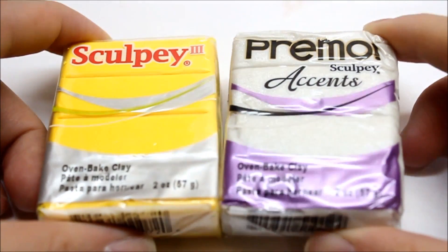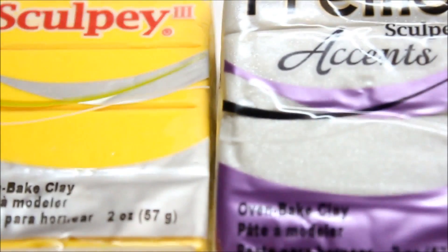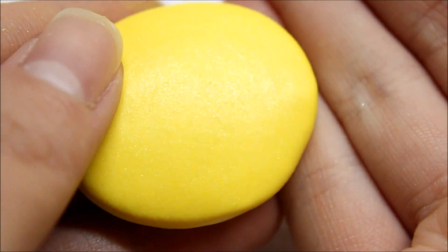You can use just yellow clay, but I want to make it a little shiny, so I'm going to add some pearl clay. Now you can see it's a little shiny.